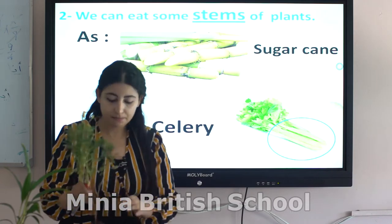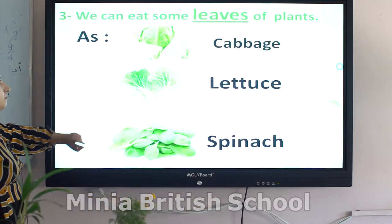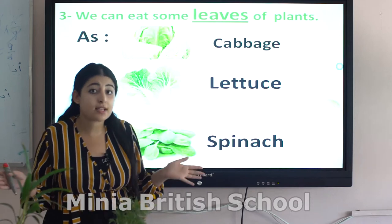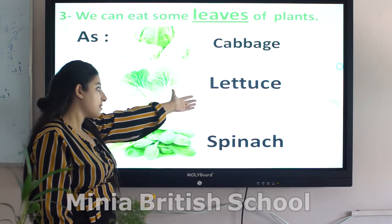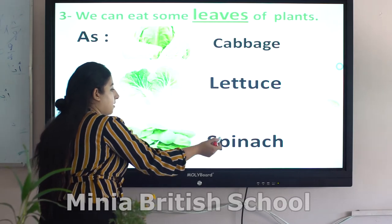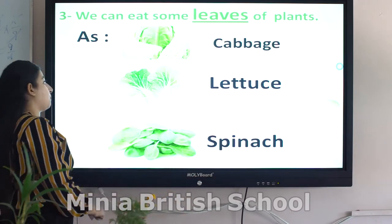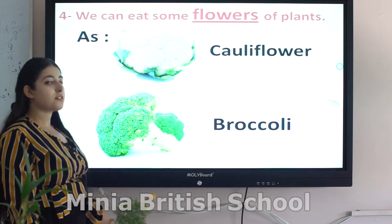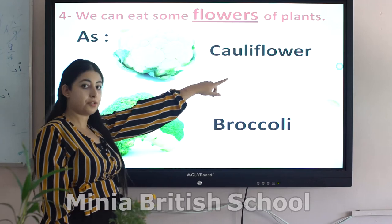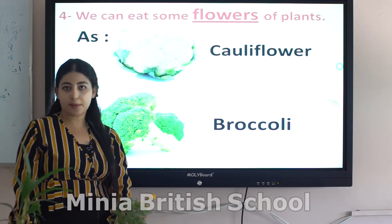What about leaves? We can eat some leaves of plants, such as cabbage, lettuce, and spinach. These are leaves we can eat. What about flowers? We can eat some flowers of plants, such as cauliflower and broccoli — cauliflower and broccoli are flowers of plants.